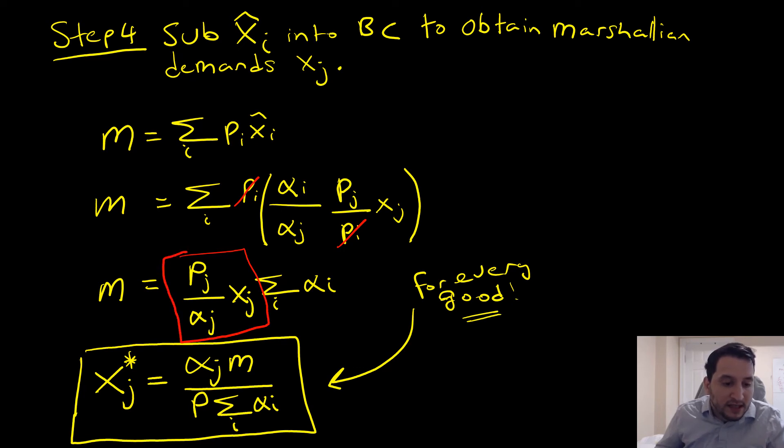From this, we're able to solve for x_j, which is our Marshallian demand for good j. Good j could be any good that we pick. This is for every single good in our n-good system.